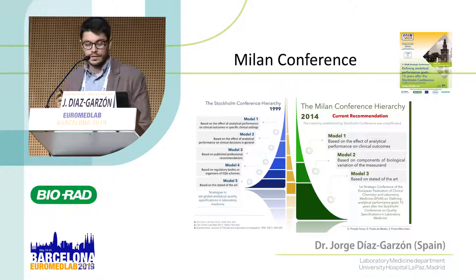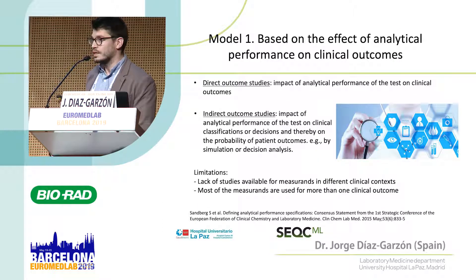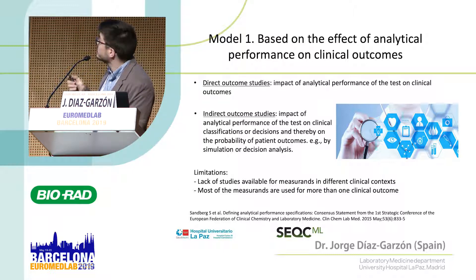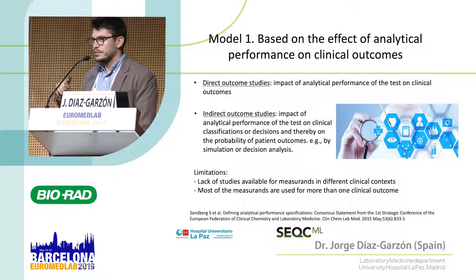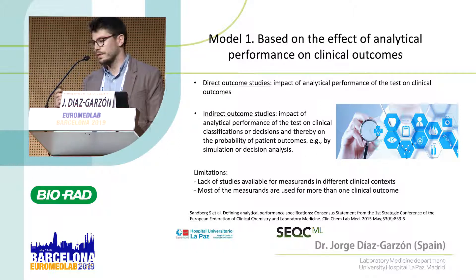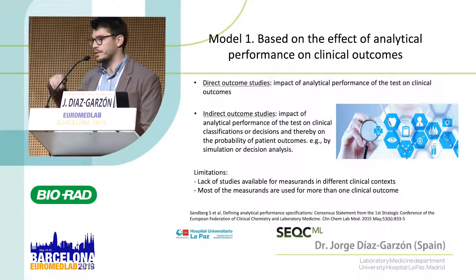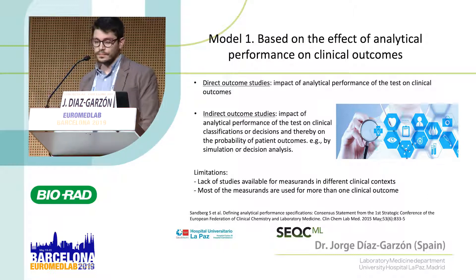The first model addresses the effect of analytical error over clinical outcomes, so this should probably be the preferred model. But this model has some disadvantages. One of these is that it can only be applied for one magnitude in one certain situation — for example, glucose for diabetes diagnosis. We can set analytical performance specifications derived from a study evaluating that outcome, but we cannot use these specifications for other uses of glucose.